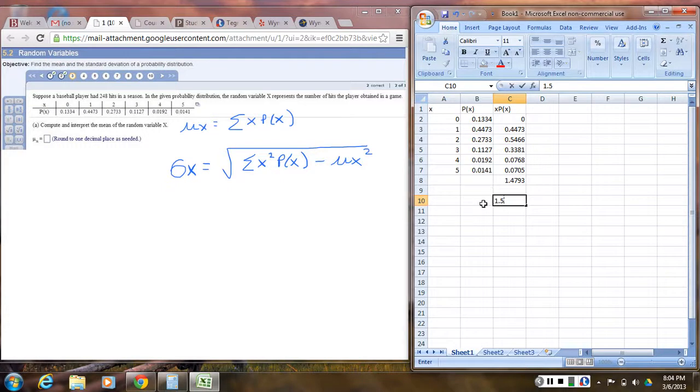Now part B is going to ask you for the standard deviation. And it's this formula where you have to take the square root of the sum of X squared P of X minus the mean squared, the mean that you just computed, which is actually right here. So I look at the formula and I go, I see an X squared in there. So guess what? I think I need an X squared column.